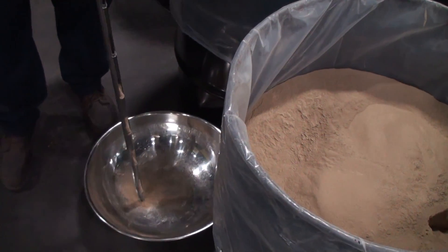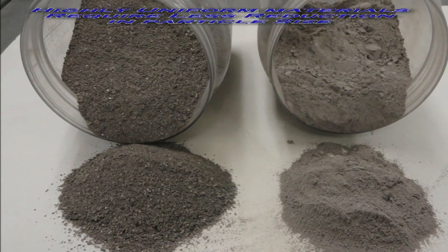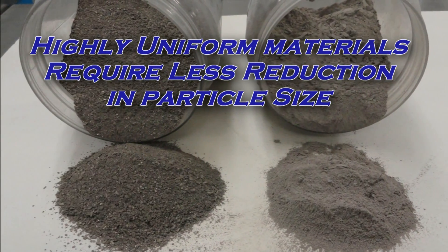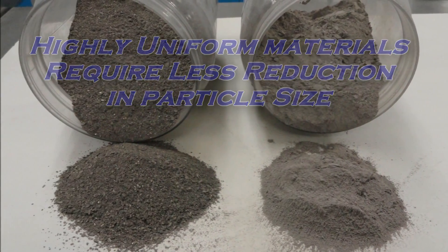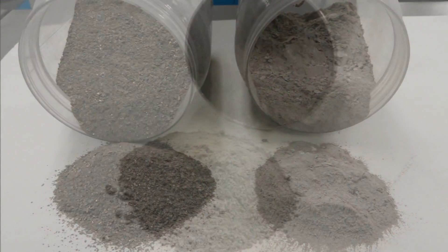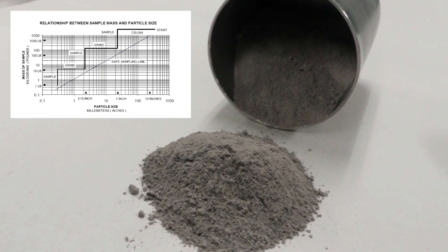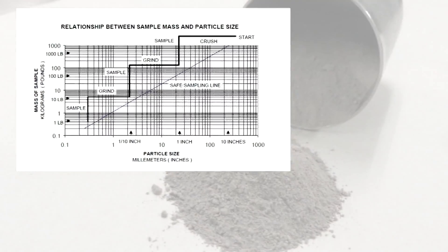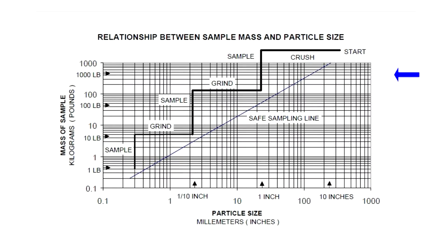The uniformity of composition of the starting material greatly affects the amount of reduction needed for a true sample. Highly uniform materials require less reduction. A fundamental principle of good sampling is to gradually reduce the bulk simultaneously with a gradual reduction in the size of the particles.